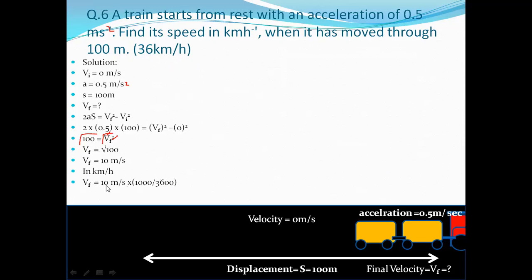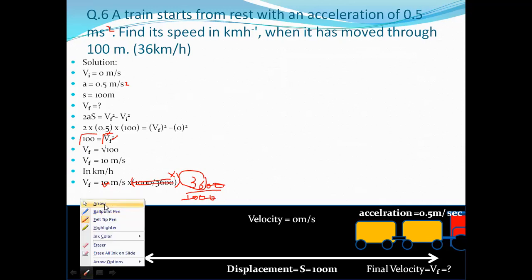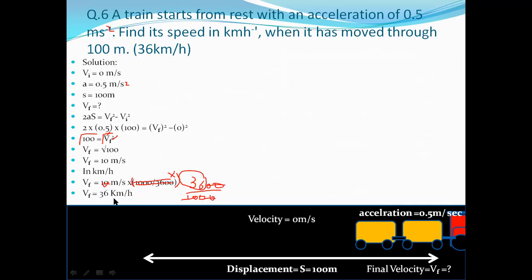To convert m/s to km/h, we multiply by 3600 and divide by 1000 (the reverse of km/h to m/s). So 10 m/s × 3600 ÷ 1000: the zeros cancel and 10 cancels with part of 3600, giving 36 km/h. That is our correct answer.